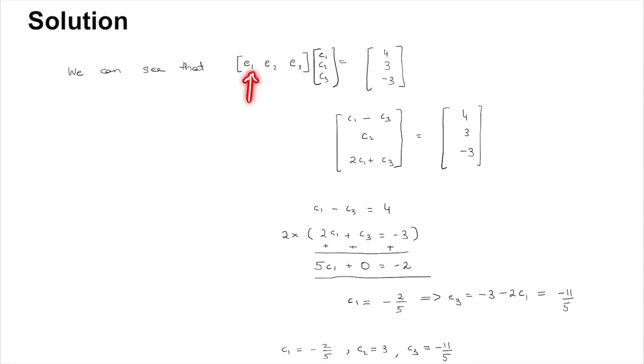Now actually substituting the values for e1, e2, and e3 from the problem and then multiplying with the constants and adding, you get the following vector on the left hand side.